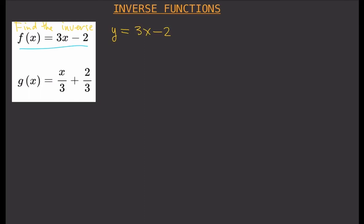The next step — and this is a very important step — is that you interchange the positions of x and y. So x goes where y was and y goes where x was. What we get is x equals 3y minus 2.